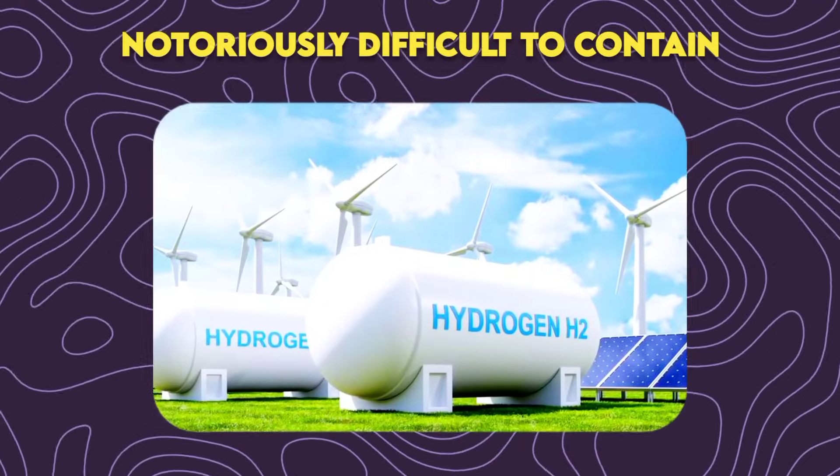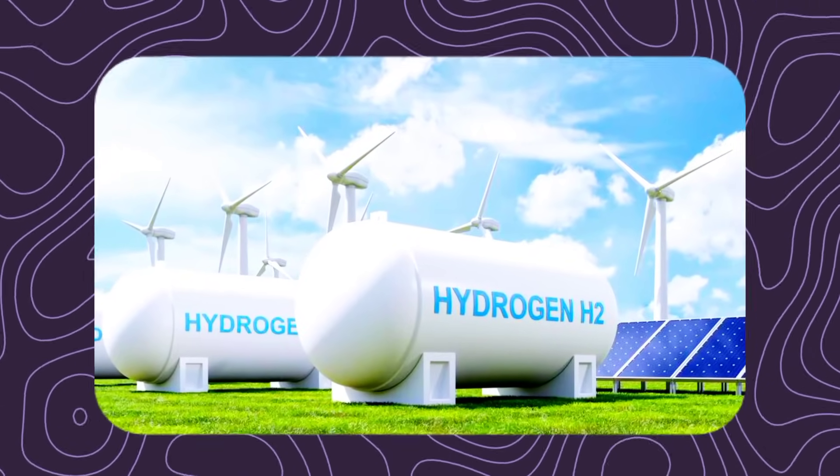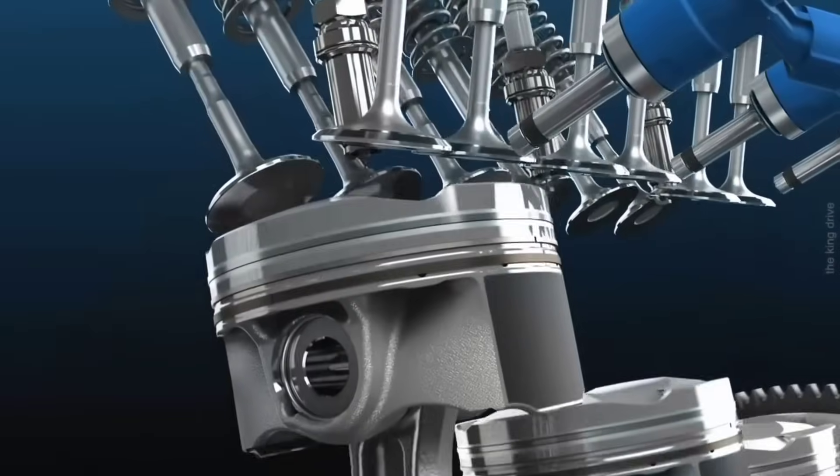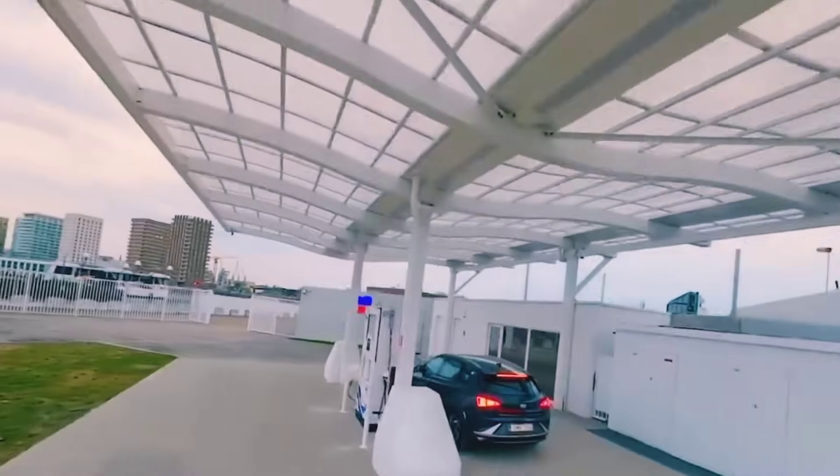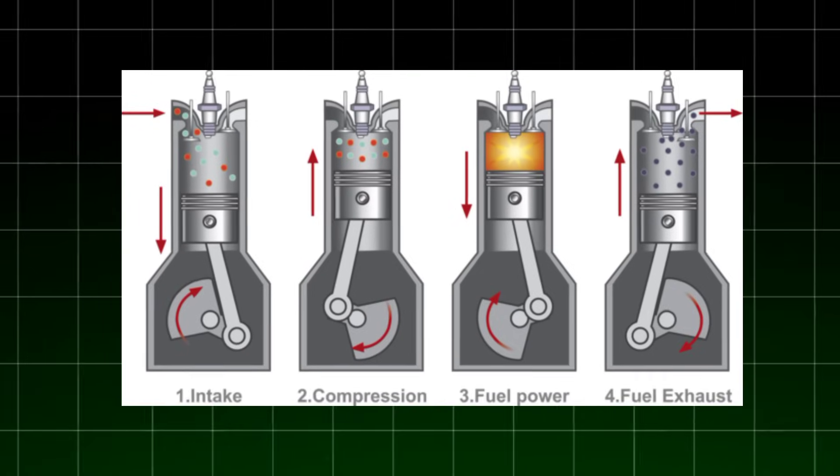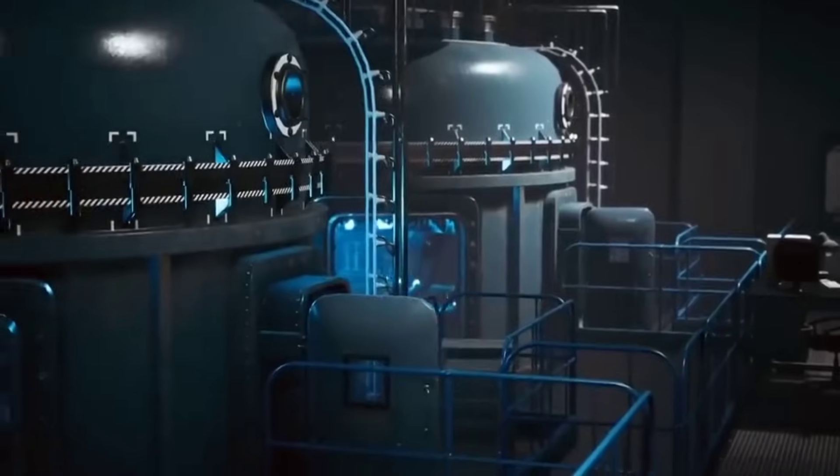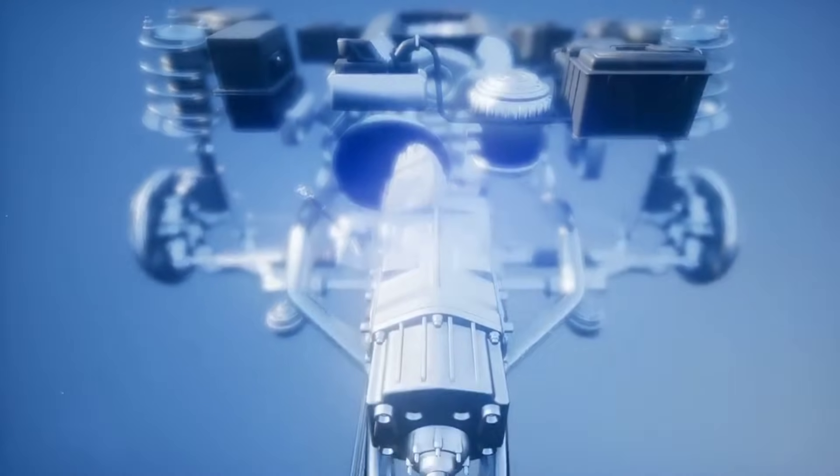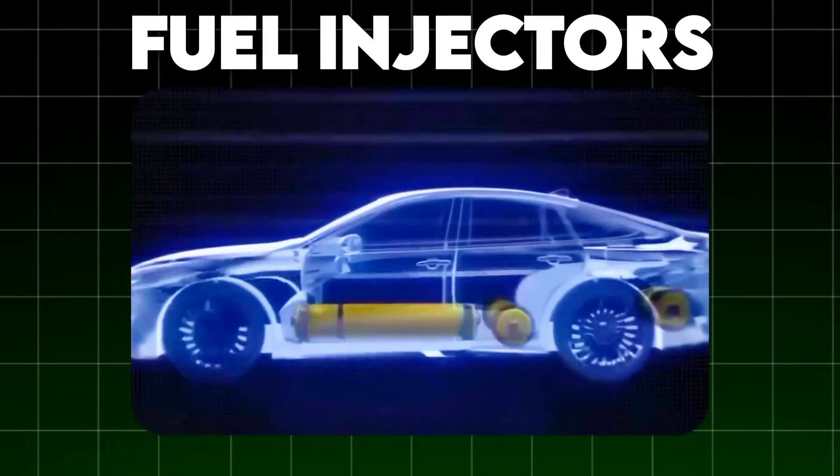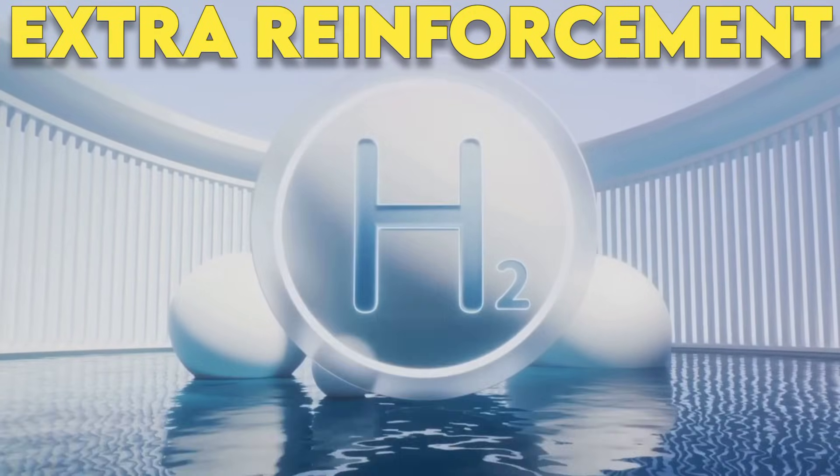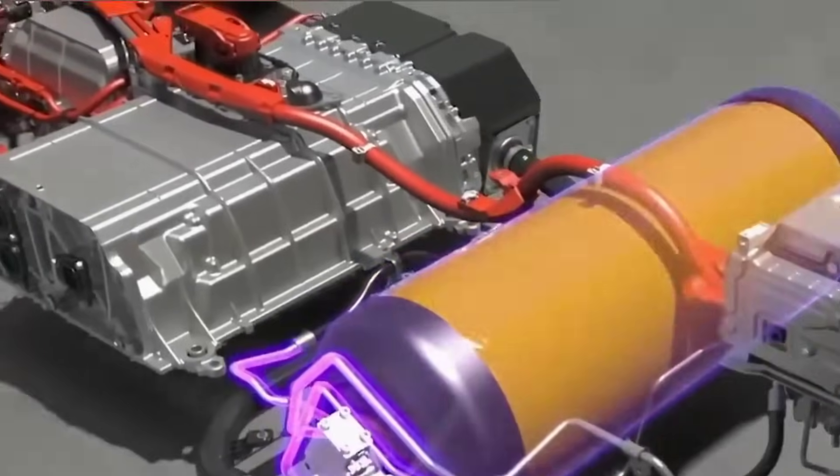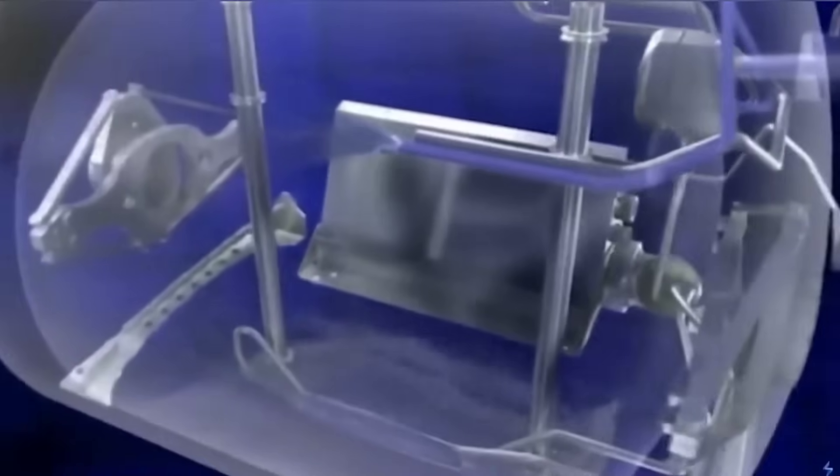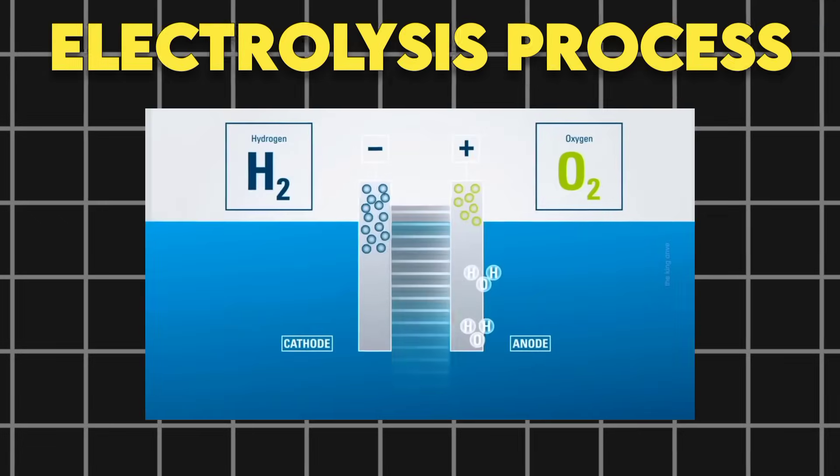Hydrogen on its own is notoriously difficult to contain. The process shares key similarity with hydrogen combustion engines. Once hydrogen is separated from oxygen, it's directed to the engine where it combusts. But to handle hydrogen's volatile nature, several adaptations are necessary. The fuel injectors must be adjusted for compressed gas, while the cylinder heads, pistons and valves need extra reinforcement due to hydrogen's highly combustible nature.